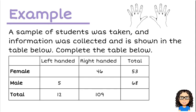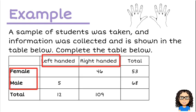So this data set here, we've got a sample of students and information about them. We've got some information about whether they are male or female, and some information about whether they are right or left-handed.